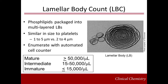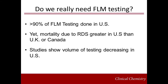In summary, all of these laboratory tests can be used for assessing fetal lung maturity. They all have their advantages and disadvantages. However, the one thing they have in common is that they are all excellent predictors of fetal lung maturity, but not fetal lung immaturity. Interestingly, despite the excellent sensitivity of these tests for predicting infants who will develop RDS, testing is done almost exclusively in the United States. However, mortality due to RDS is greater in the United States than in the UK or Canada. Furthermore, several studies confirm a decrease in the volume of FLM testing done in the US over the last 10 years.